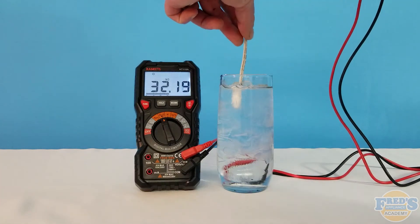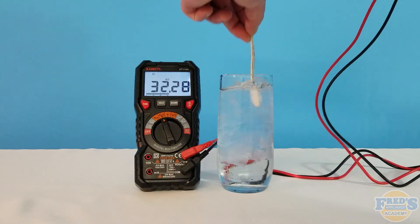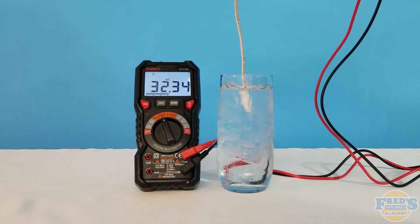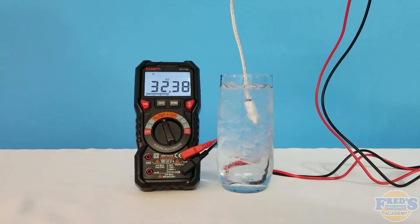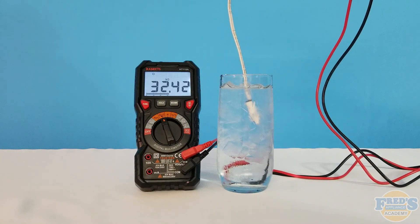So here we have a working and accurate thermistor. It read correctly at 73 degrees as well as 32 degrees. Now keep in mind these resistance values should be within plus or minus 10 percent.